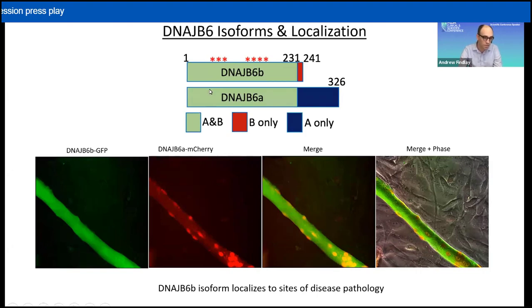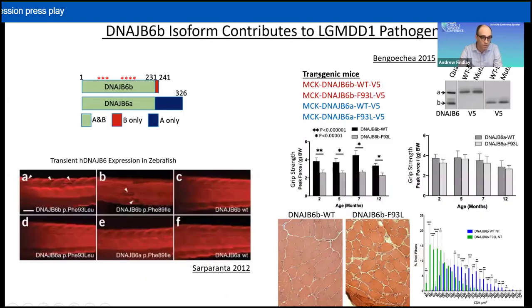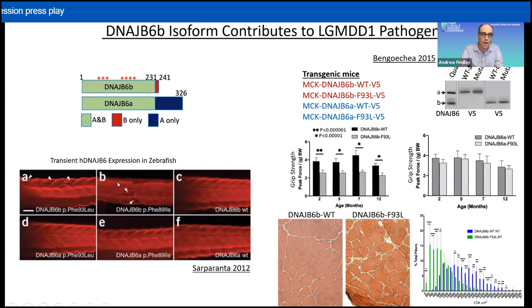Despite mutations affecting both isoforms, we might expect isoform-specific differences in contribution to pathogenesis, as only the B isoform localizes to sites of pathology seen in muscle biopsies. There is evidence that the B isoform alone contributes to disease pathogenesis. Bjarni Udd's group in 2012 injected zebrafish with human DNAJB6 mRNA and found that injecting mutant B isoform but not mutant A isoform resulted in myodegeneration.